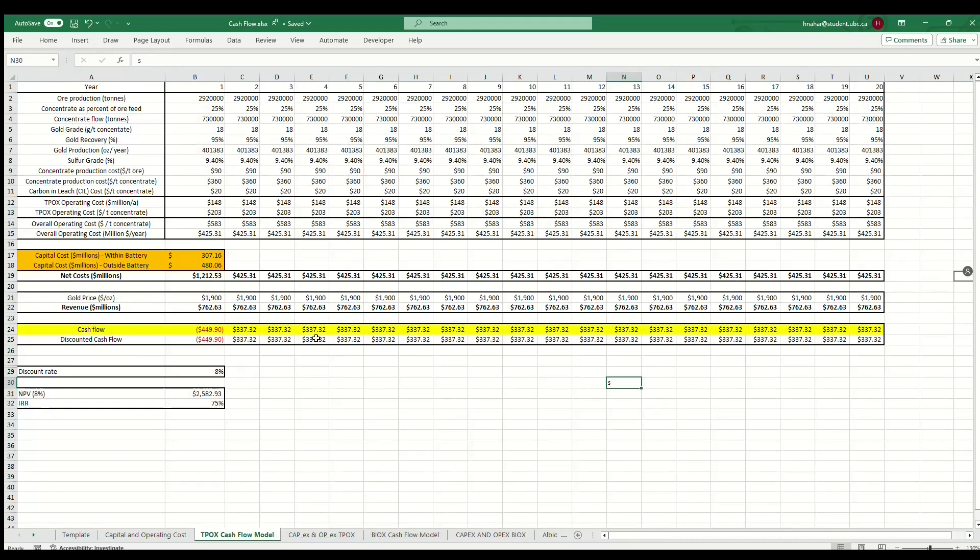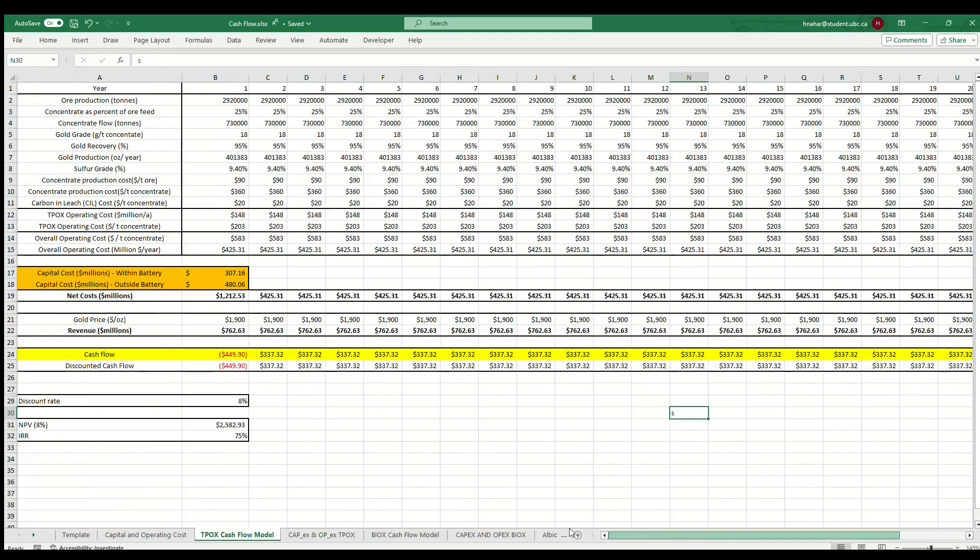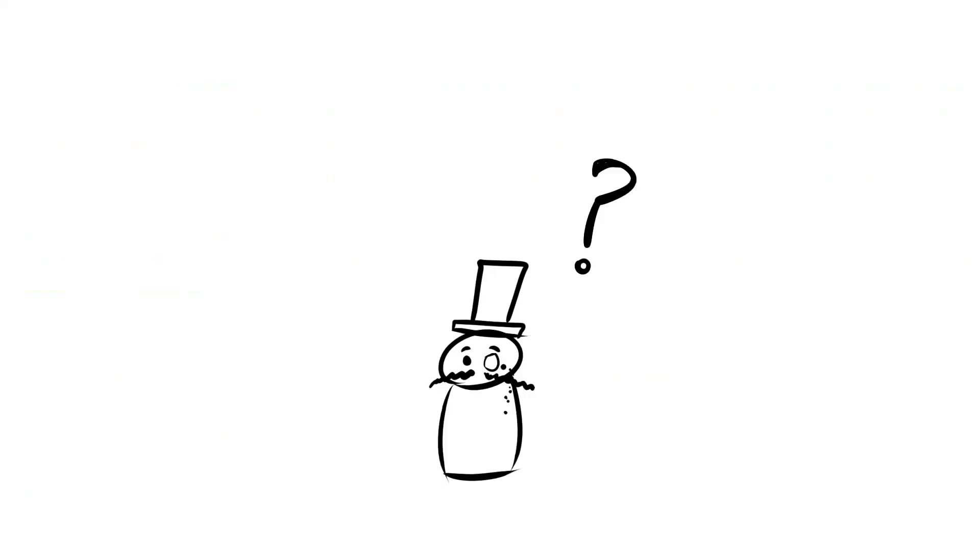Finally, a cash flow model is created. A cash flow model describes the money flowing in and out of the plant over its entire lifetime, including investment, operating costs, and revenue. That's a lot of things to keep track of.